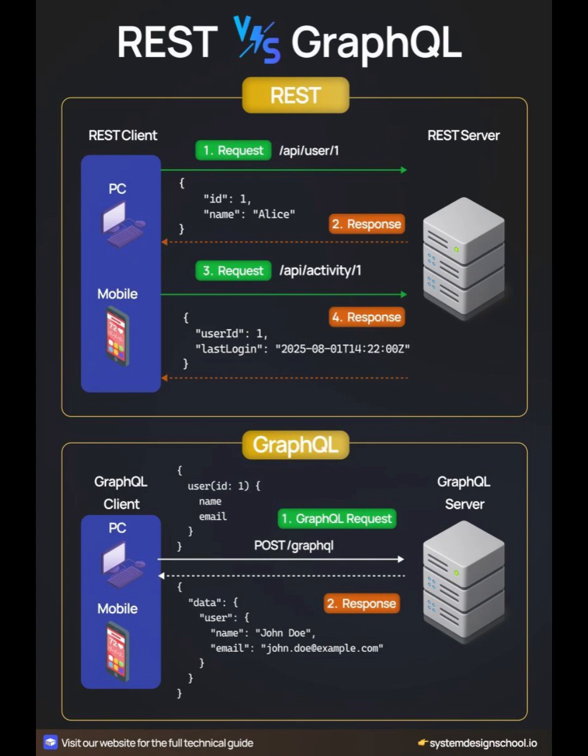REST: multiple endpoints, fixed responses, more requests. GraphQL: single endpoint, flexible queries, less data waste. Choose REST for simplicity and standards. Choose GraphQL for precision and performance.